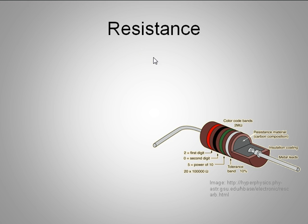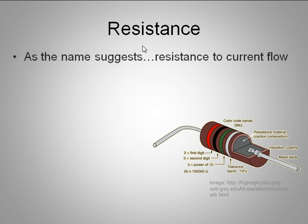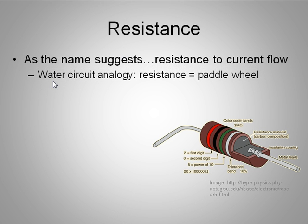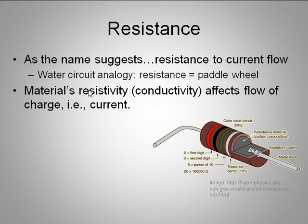A resistor - let's talk about resistance. Resistance is, as the name suggests, a resistance to current flow. The water circuit analogy would be that electrical resistance would be analogous to perhaps a paddle wheel, the device that is doing the work.